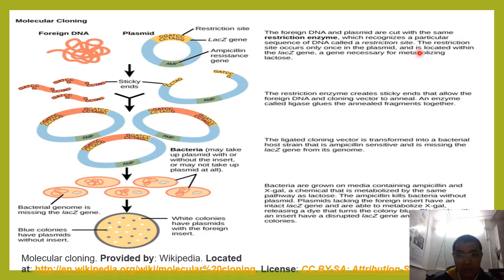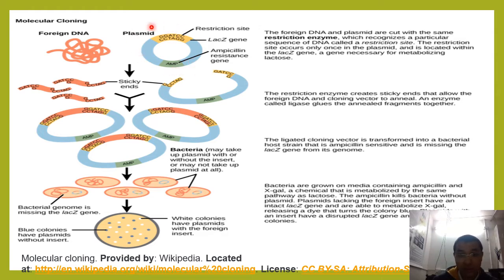This restriction site occurs only in the plasmid and is located in the lactose gene, which is responsible for metabolizing lactose. In this plasmid there is an ampicillin resistance gene, which acts as a marker. Whenever you grow the bacterial cells in culture medium in the presence of ampicillin, the rest of the bacteria will die — only those bacterial cells will survive which have this ampicillin resistance gene.